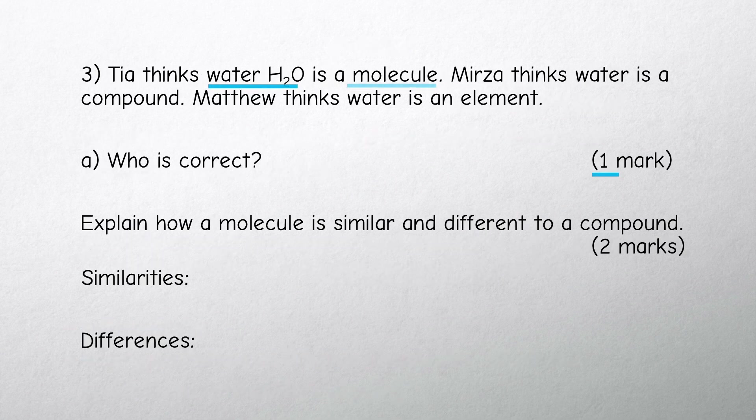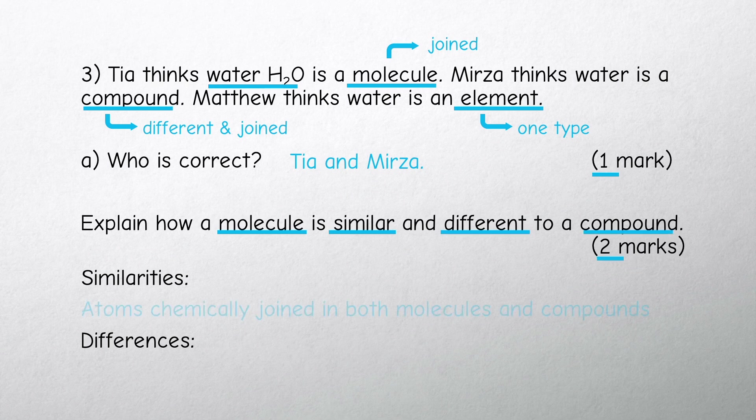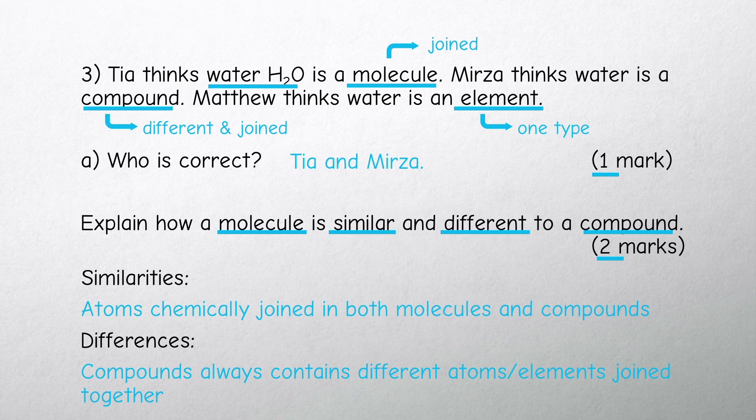Both Tia and Merza are correct as water is both a molecule and a compound. Molecules and compounds have atoms which are chemically joined or bonded together, but compounds always contain different types of atoms which are joined together, whereas molecules can sometimes be made of the same type of atoms which are joined together.